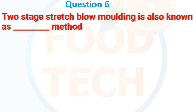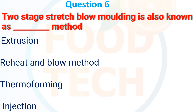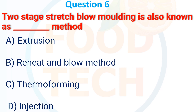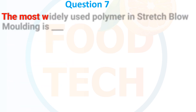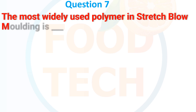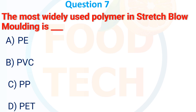Two-stage blow molding is known as which method? (a) Extrusion, (b) Reheat and blow method, (c) Thermoforming, (d) Injection. The answer is (b) Reheat and blow method.